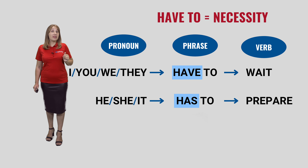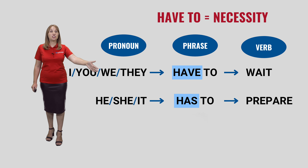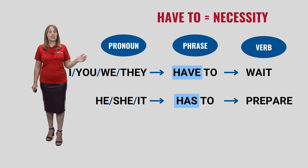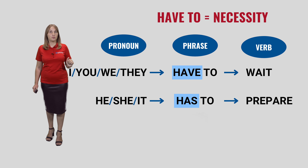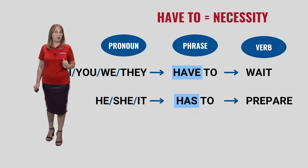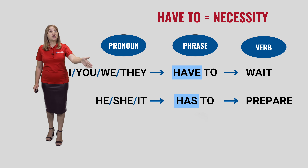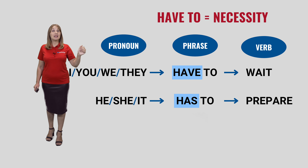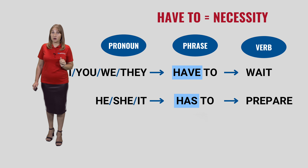Whenever we use the pronouns HE, SHE, or IT, the phrase changes to HAS TO. For example: He has to prepare. She has to prepare. It has to prepare.